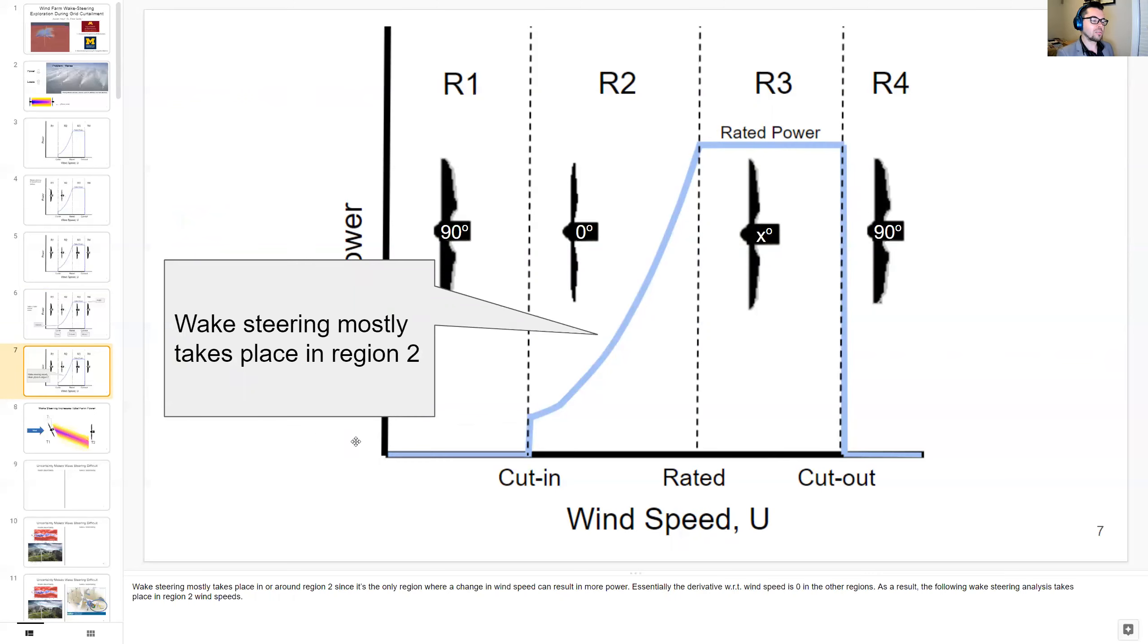Wake steering mostly takes place in or around region 2 since it's the only region where a change in wind speed can result in more power. Essentially, the derivative with respect to wind speed is zero in all other regions, and as a result, the following wake steering analysis takes place in region 2 wind speeds.